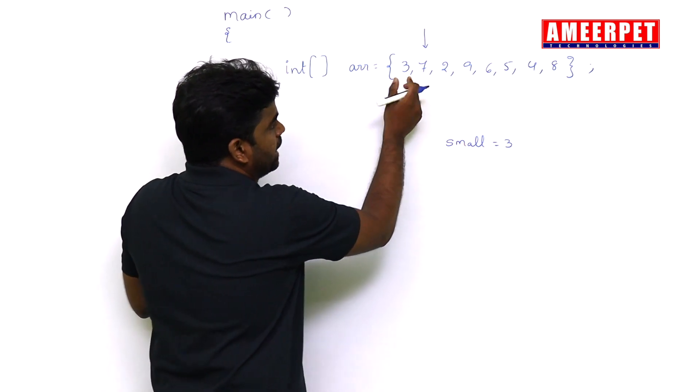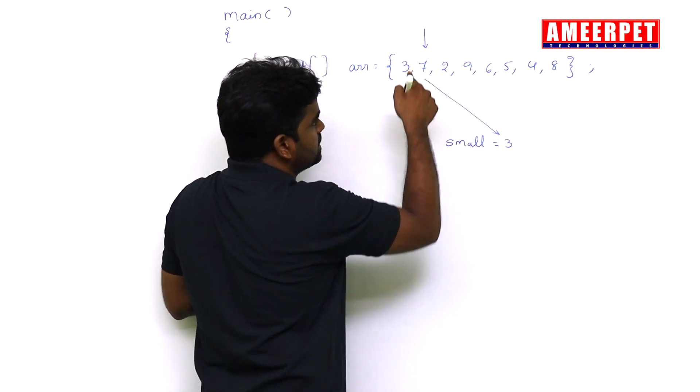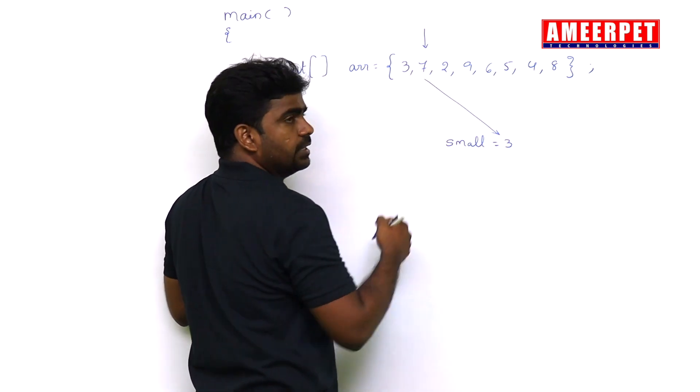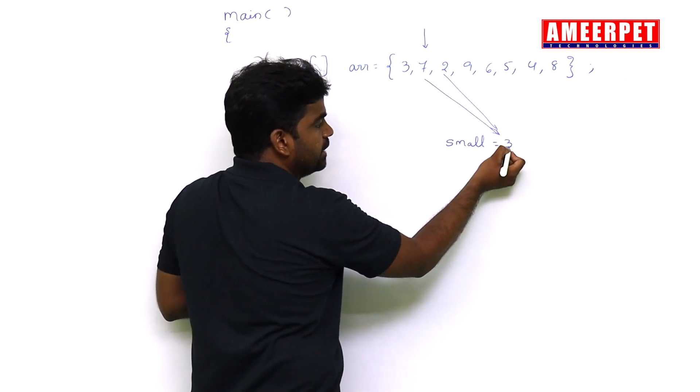Then every time, compare the index element with the smallest element. Is 7 less than 3? No, condition false. Is 2 less than 3? Yes, true.